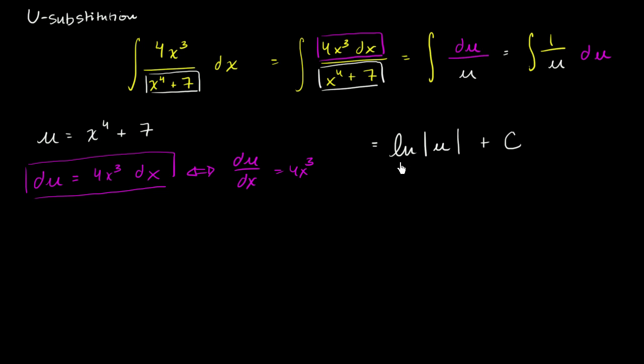But now we need to unsubstitute the u. So what happens when we unsubstitute the u? Well, then we are left with, this is going to be equal to the natural log of the absolute value of, well, u is x to the fourth plus 7. x to the fourth plus 7, plus 7. And then we can't forget our plus c out here. And we are done.